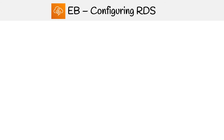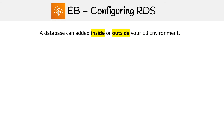We need to talk about configuring your RDS database with Elastic Beanstalk because you actually have two options: you can add a database inside or outside your Elastic Beanstalk environment. You might not even be aware which one you're doing when setting it up, so it's important to know the difference.